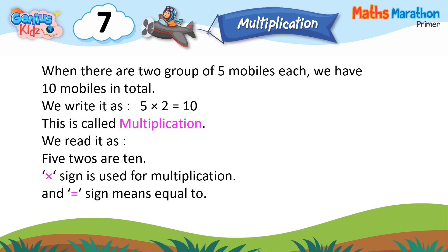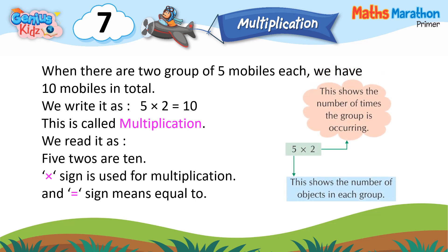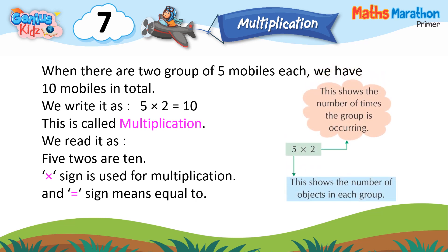We read it as '5 twos are 10.' The multiply sign is used for multiplication, and the equals sign means equal to. This shows the number of times the group is occurring. 5 multiply 2 — this shows the number of objects in each group.